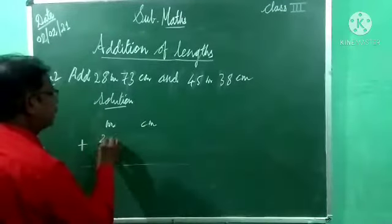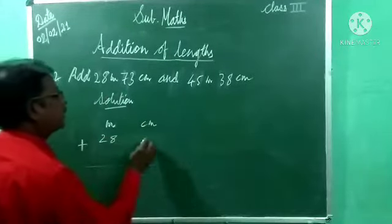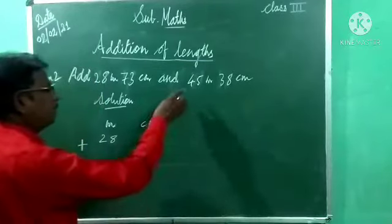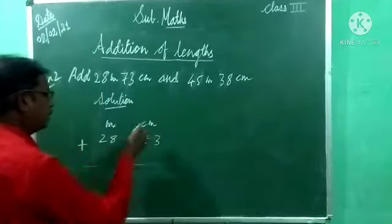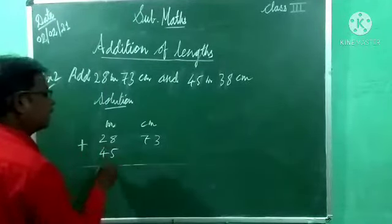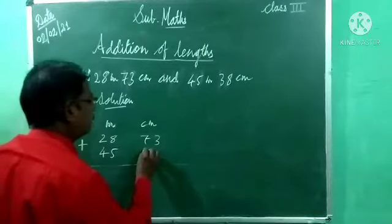Below meter, write 28 meter and 73 centimeter. And below this 28, again what is given? 45 meter. Write here 45, and 38 centimeter.